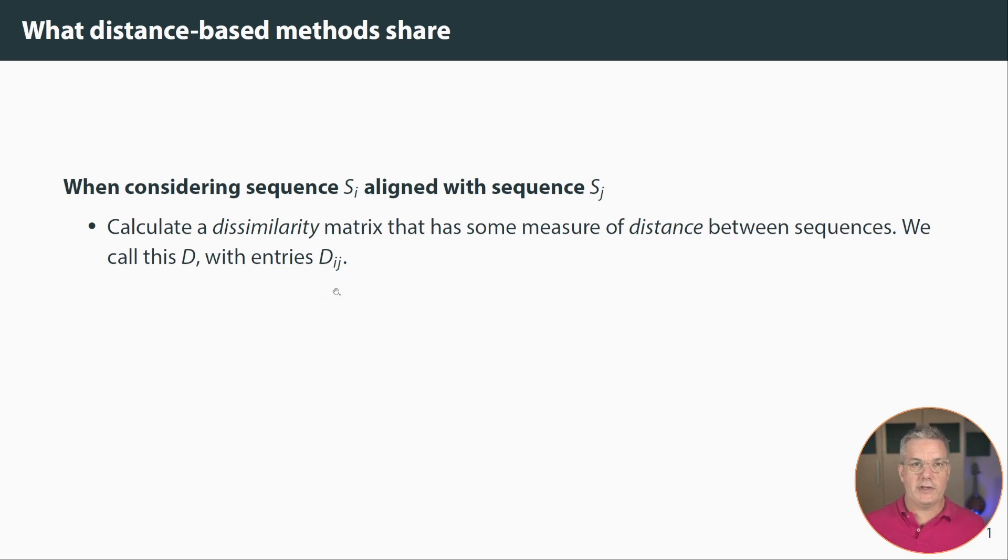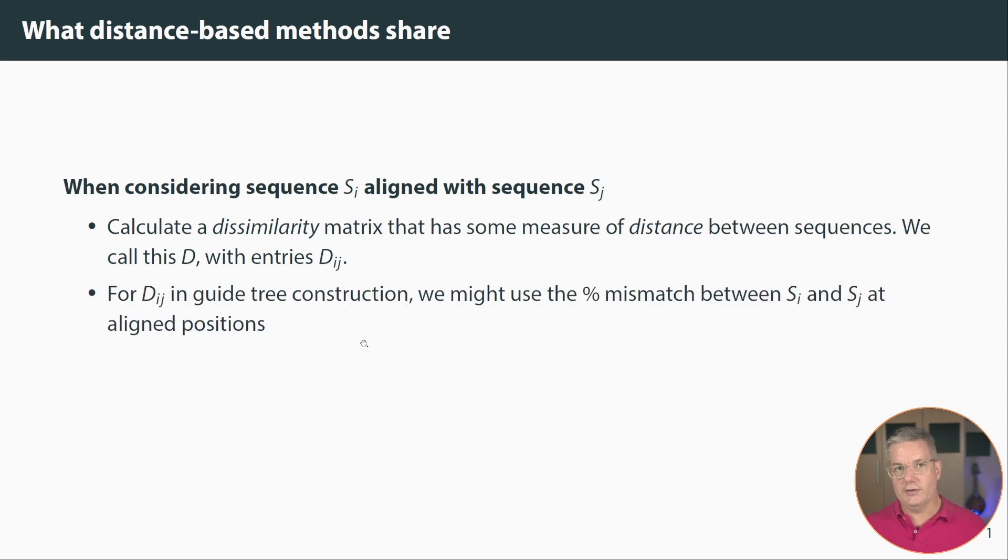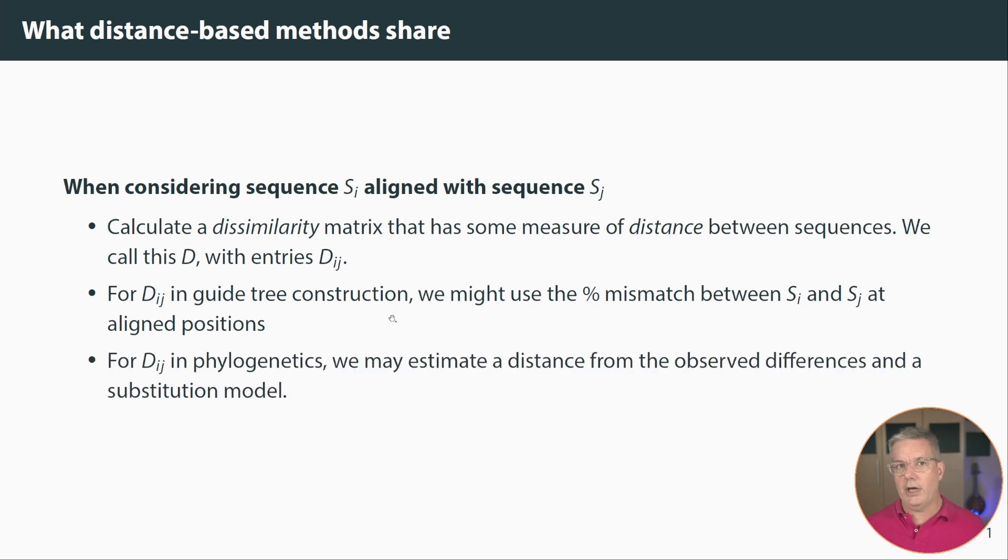When we're doing multiple sequence alignment itself, we might have already created such a distance matrix in the form of guide tree construction, and for that we might use something simple like the percent or proportion of mismatch between the sequences. But when we're doing phylogenetics, we might want to use some more realistic distance based on a nucleotide substitution model, and if you're unfamiliar with substitution models, I encourage you to watch the substitution model video in this series.